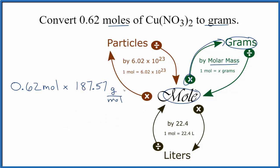The units for molar mass are grams per mole. When we multiply now, we have moles on top and the bottom. They cancel out.